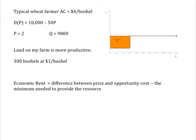Economic rent is the difference between the price and my opportunity cost — the minimum needed to provide the resource. The economic rent in this case is a characteristic of my land, not my wheat. My productive land is a scarce resource. I should be able to sell it to any of my neighbors, and they would be willing to pay me up to the point where, factoring in the rental rate on the productive services from my land, the average cost of a bushel of wheat from my land would rise to no more than $4 a bushel. So, upward sloping supply in the long run is a function of differences in the productivity of scarce resources — that is, it is a function of economic rent.